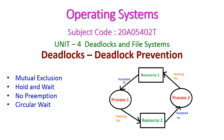Hello friends, in today's operating system class we will see deadlock prevention, which comes under the 4th unit. To prevent deadlock, we have to check 4 conditions: mutual exclusion, hold and wait, no preemption, and circular wait. If these conditions occur in your system then there is a possibility of deadlock, so we need to overcome these situations. Let us see all those things one by one.